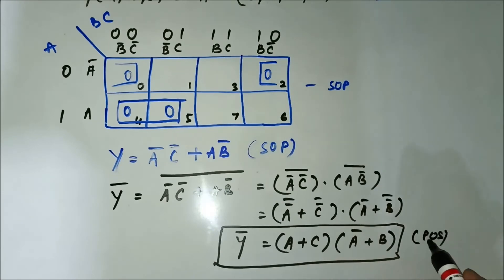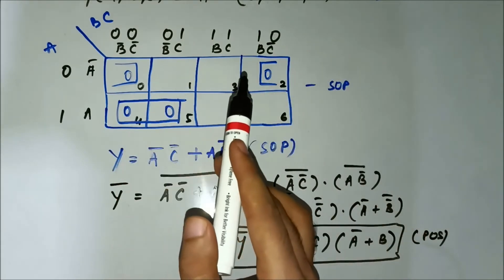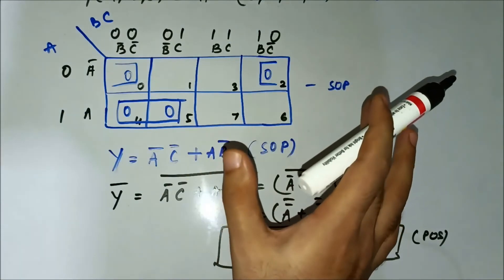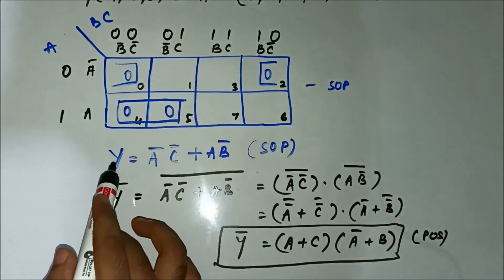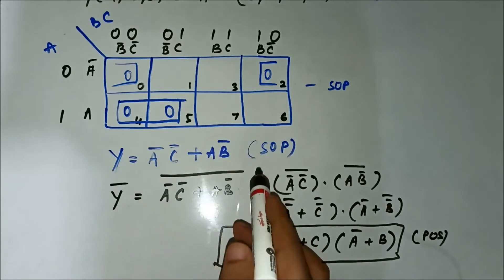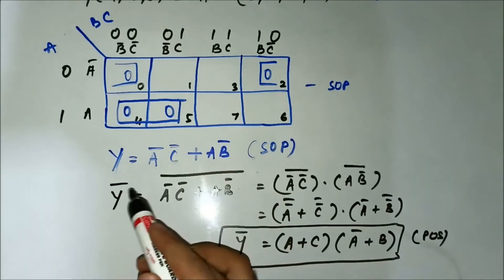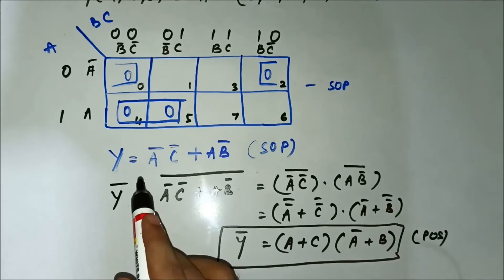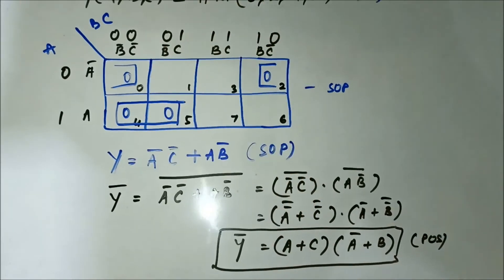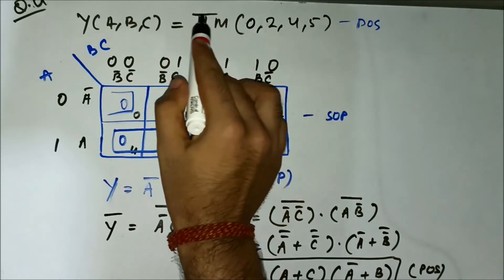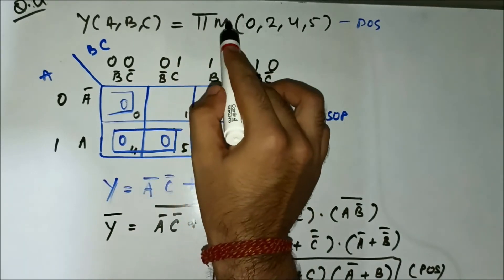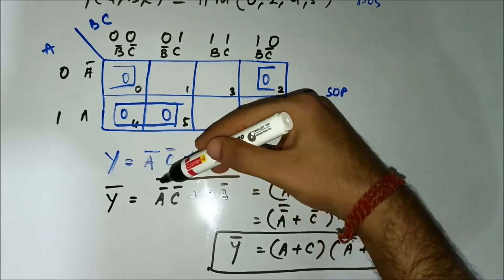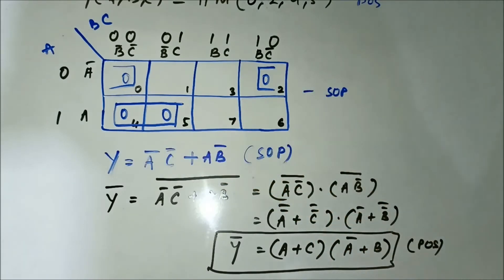Always remember: when you are using the opposite K-map for a particular Boolean expression — that is, if a POS max terms expression is given and you are using a SOP K-map — the result which you get, always take the complement of it. Because the result will be in the same format as the K-map, but you have to get the result in the format of the question asked, which is max term or POS format. So always take the complement.